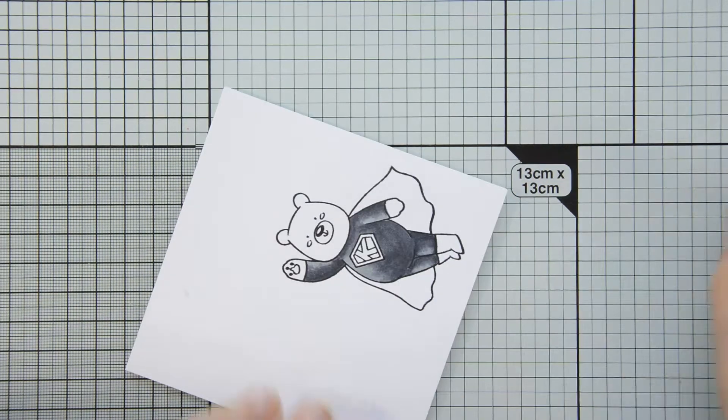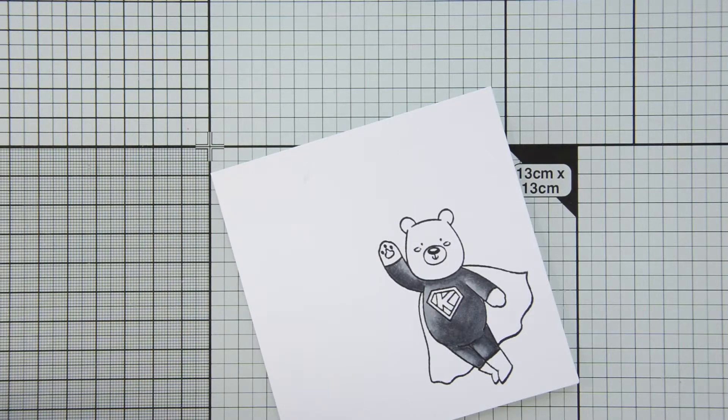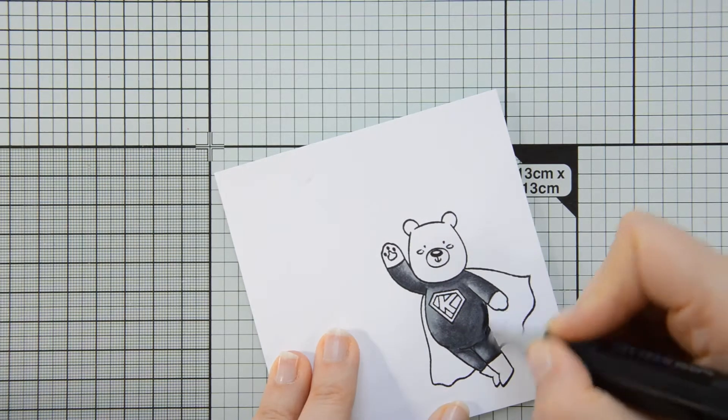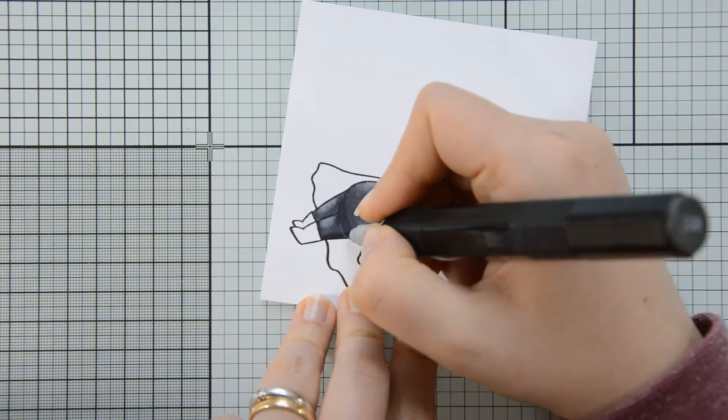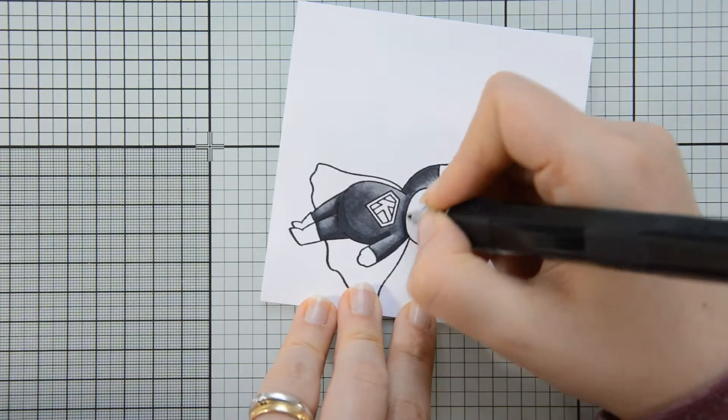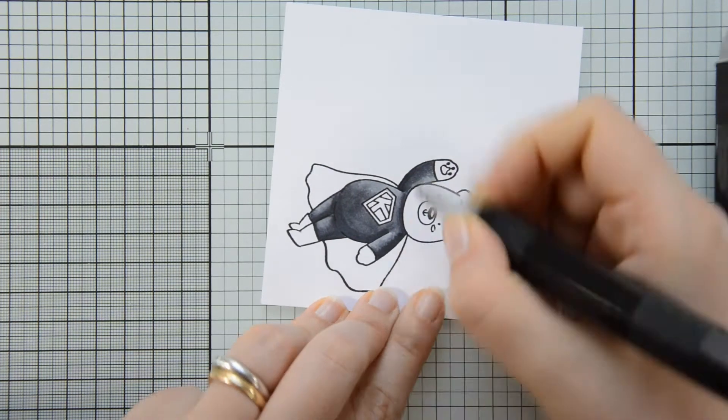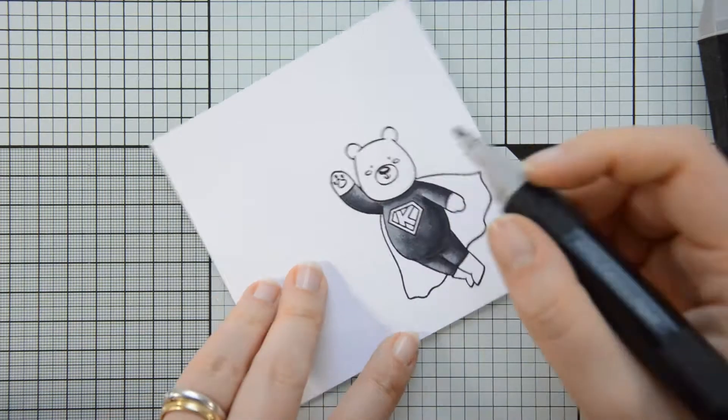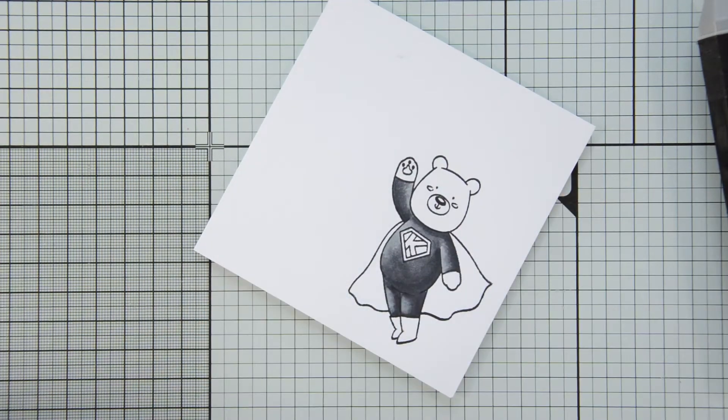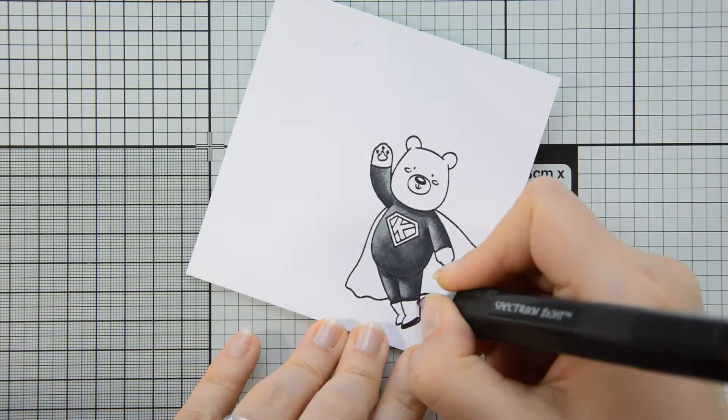I am adding my shadows as if the light is on the top left of the screen, so you can see my highlights are on the left part of the image, and my darkest shadows are on the right side of the image. In order to get a nice feeling of dimension, I am also following the shape of the image when I'm adding my shadows.